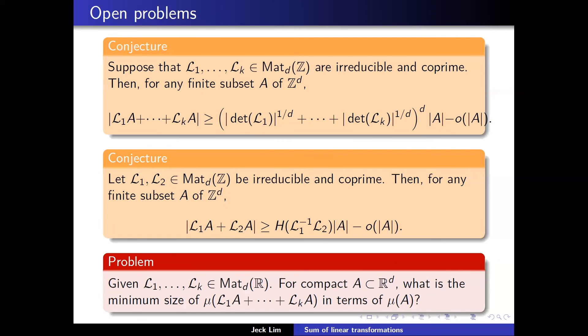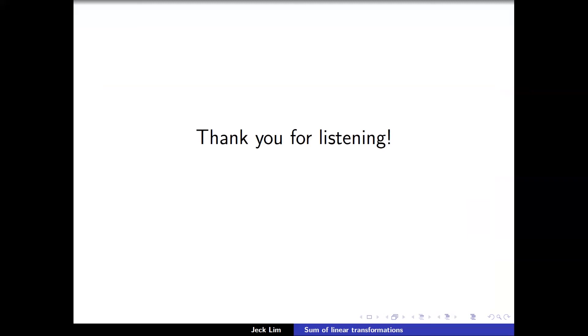Some of the open problems: the first is Book's original question for multiple summons. Another conjecture is to prove the two-summen case with the optimal linear bound. The third open problem is just to find a good linear bound for multiple summons—and not even in the discrete case but for the continuous case.